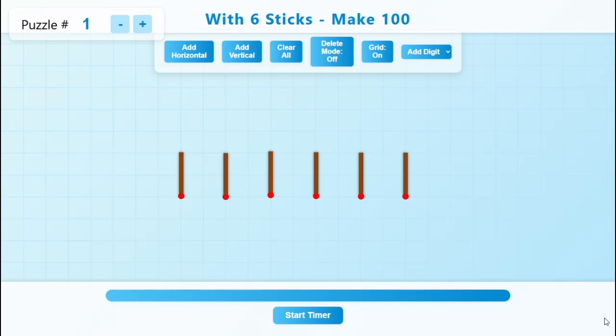By using only six matchsticks, you have to make 100. So if you see on the screen, there are six matchsticks which are given, and you can use these six matchsticks to make 100.